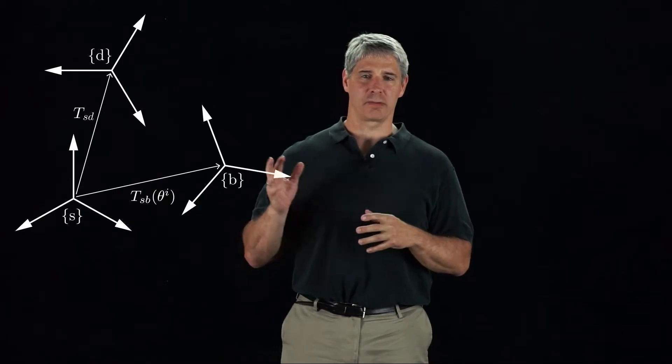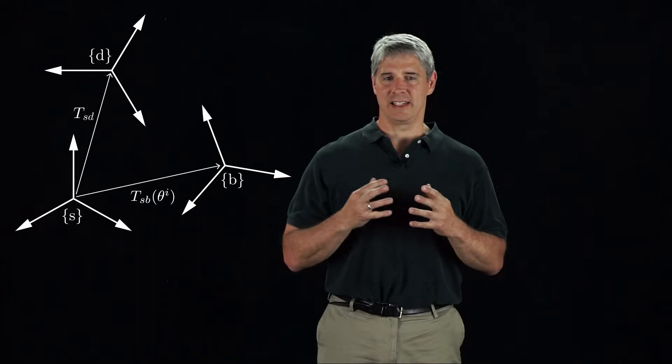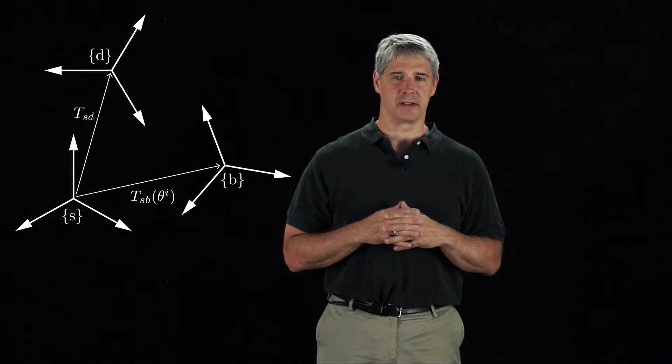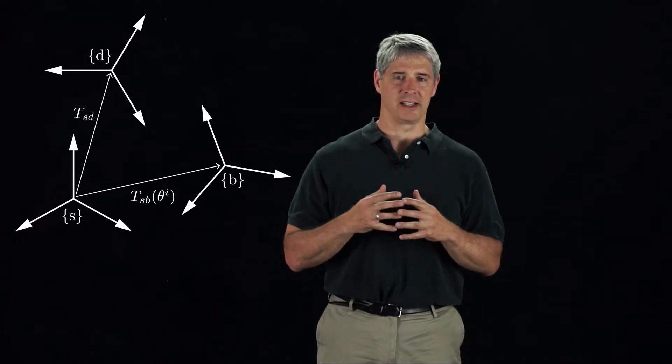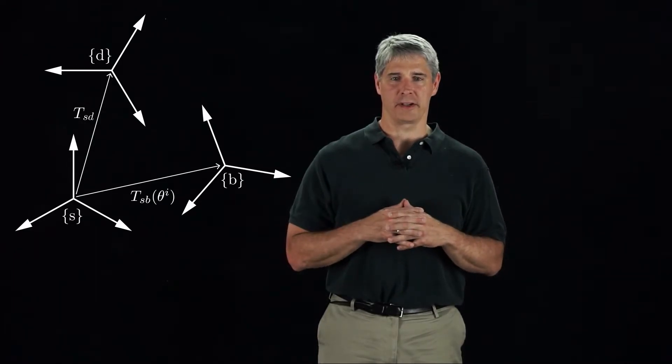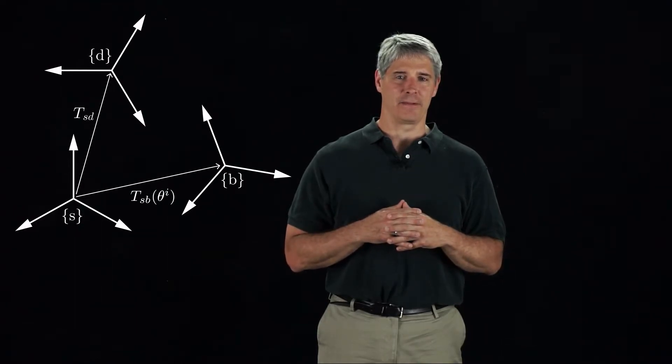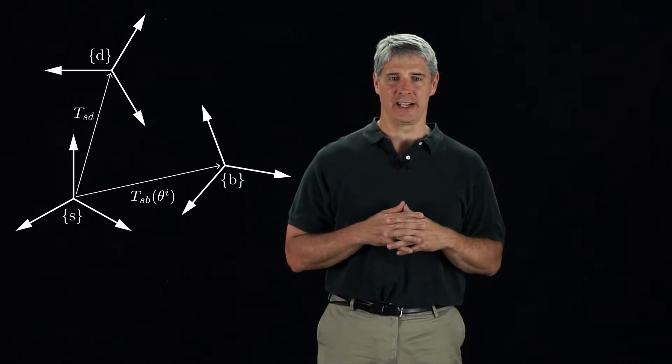Let's illustrate using these three frames. The S frame is fixed in space. The D frame is the desired configuration of the end-effector, and it is represented in the S frame as T_sd. The B frame is the configuration of the end-effector if the joint vector is theta i, given by the forward kinematics T_sb(theta i).